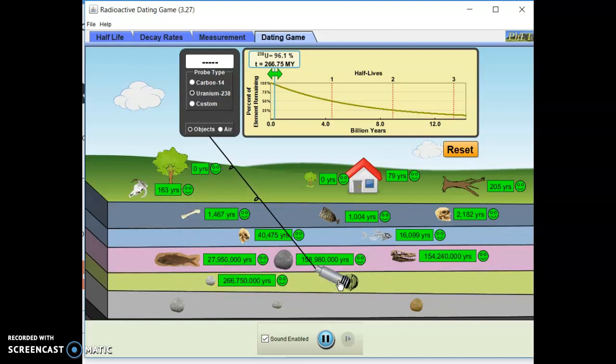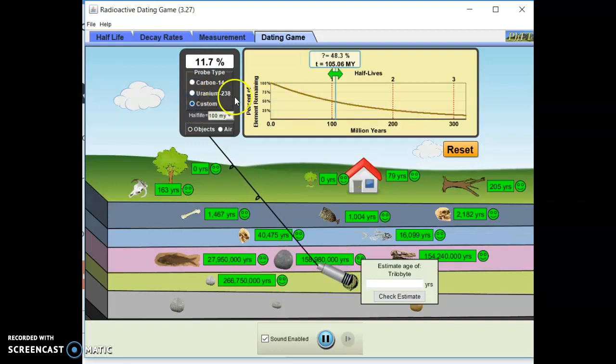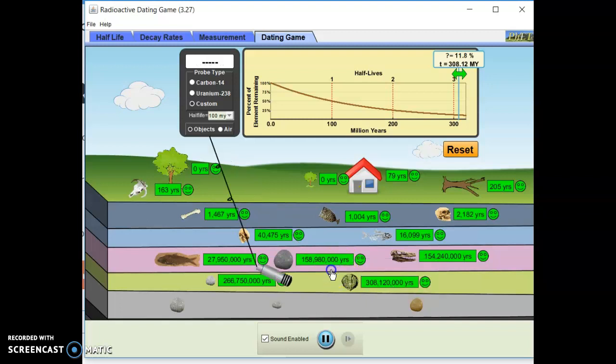We have a trilobite. No uranium. Switch to custom. Zero. Okay. We have a trilobite. This one needs a hundred million years. Eleven point seven. Close enough. Thirty-four point five. Thirty-eight million. And twenty thousand. All right, three more, guys.